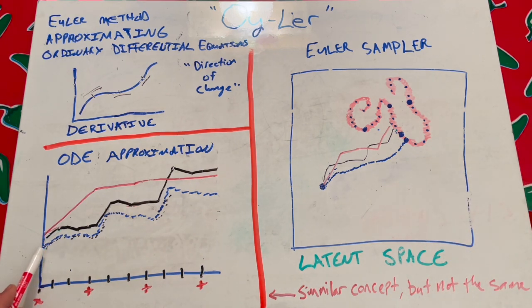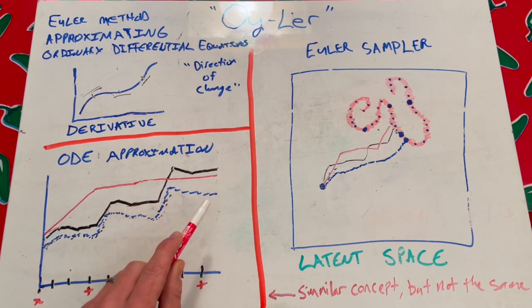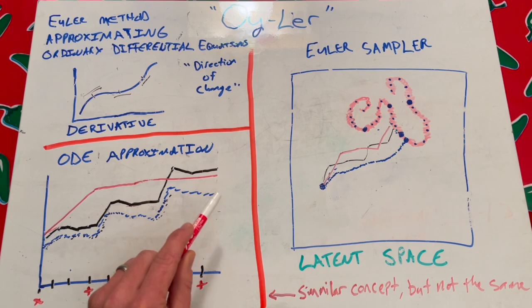And if I were to take this really, really tiny step size, I would get a much better approximation and end at this result with much less error.